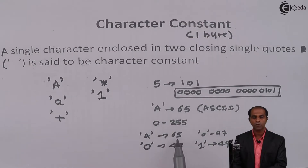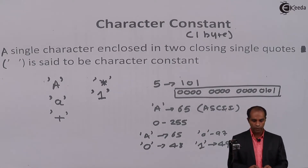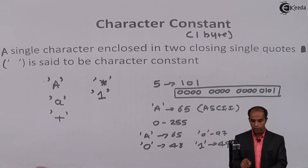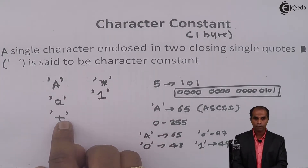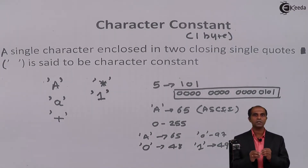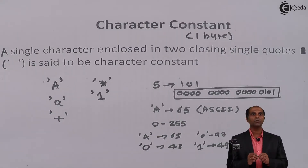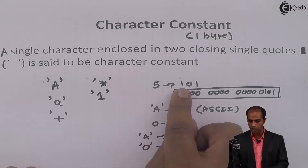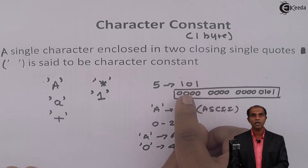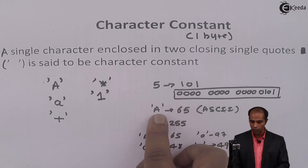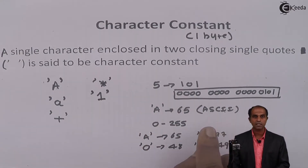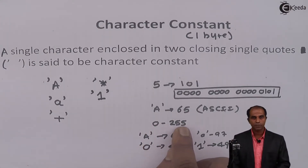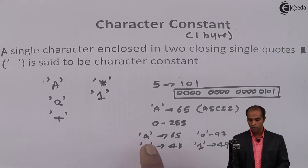To summarize: we call something a character constant if it contains a single character enclosed within single quotes. We can have alphabets, digits, or special characters. Constants are always stored in binary format — in terms of 1s and 0s. The numbers used for alphabets are called ASCII codes or ASCII values. There are 256 ASCII values total; the first starts at 0 and the last is 255.